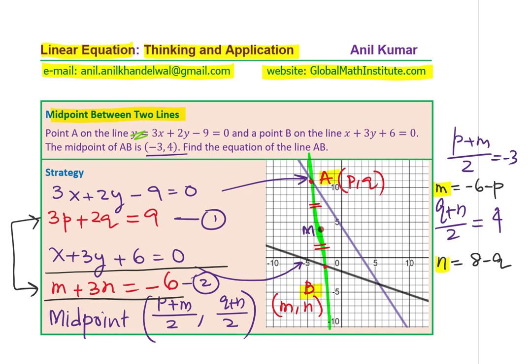So that will help us to get the points A and B. Once we get the points A and B, we can always find the equation between the two points. The line going through these two points is unique. So that is the strategy. Now with this strategy in mind, I like you to pause the video, answer and then look into my suggestions.